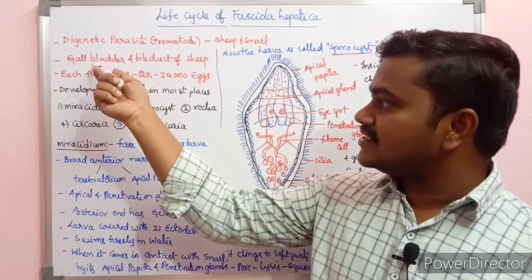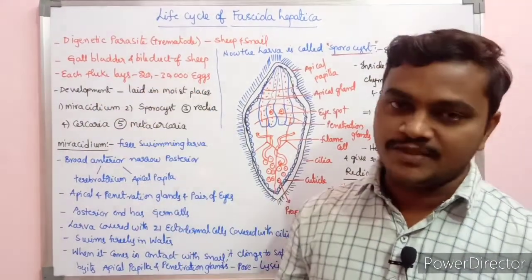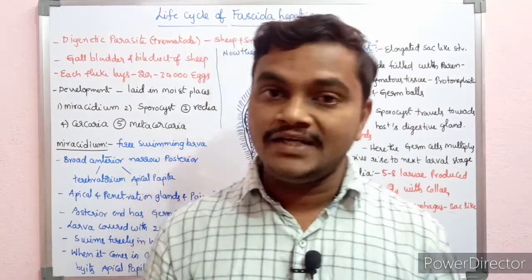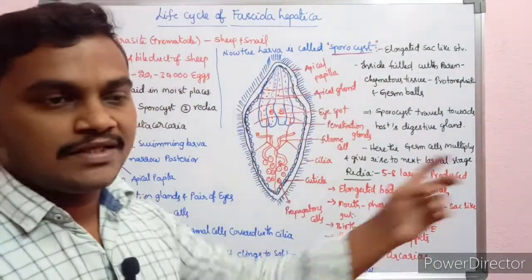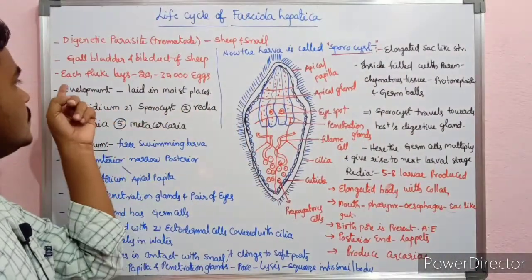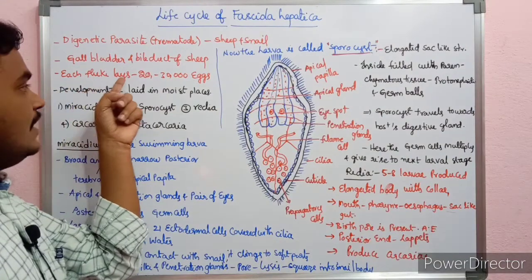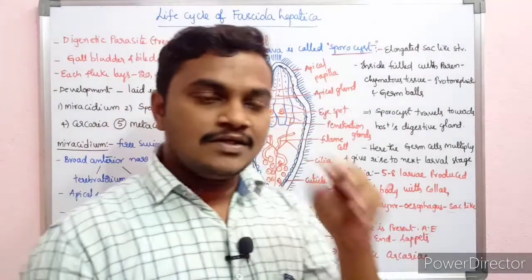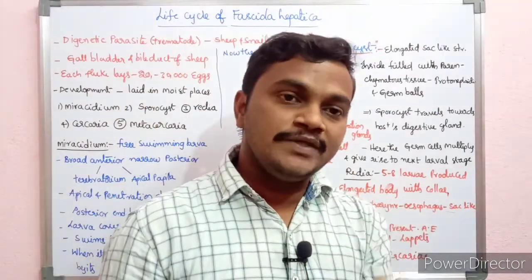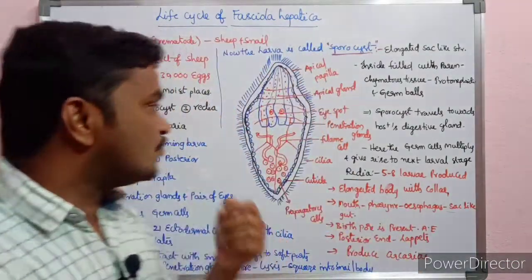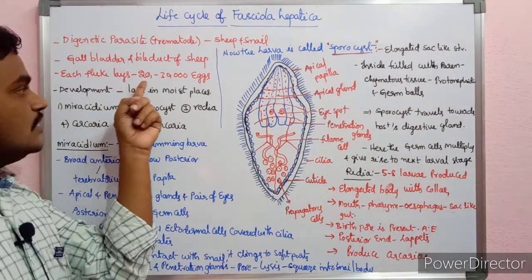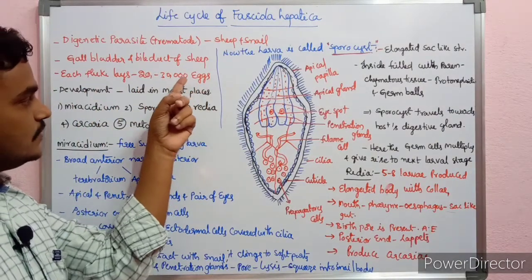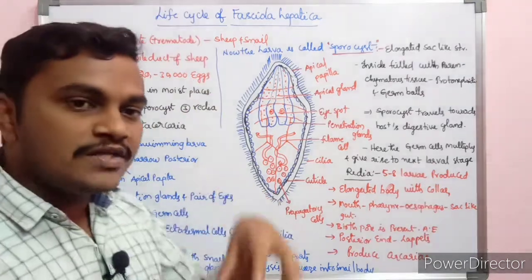It occurs in the gallbladder and bile duct of sheep. Generally, each fluke lays 40,000 to 30,000 eggs. They lay down on moist surfaces.